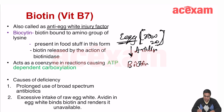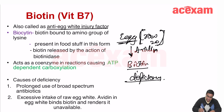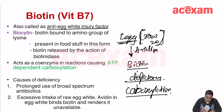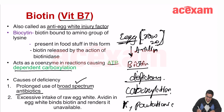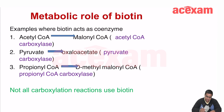An important point about biotin: if raw eggs are consumed, the protein avidin binds biotin and causes biotin deficiency. Biotin (B7) is associated with carboxylation reactions. It is also produced by gut bacteria, so broad-spectrum antibiotics can lead to biotin deficiency. Vitamin K and pantothenic acid are also produced by gut bacteria — remember these three vitamins are produced by gut flora.